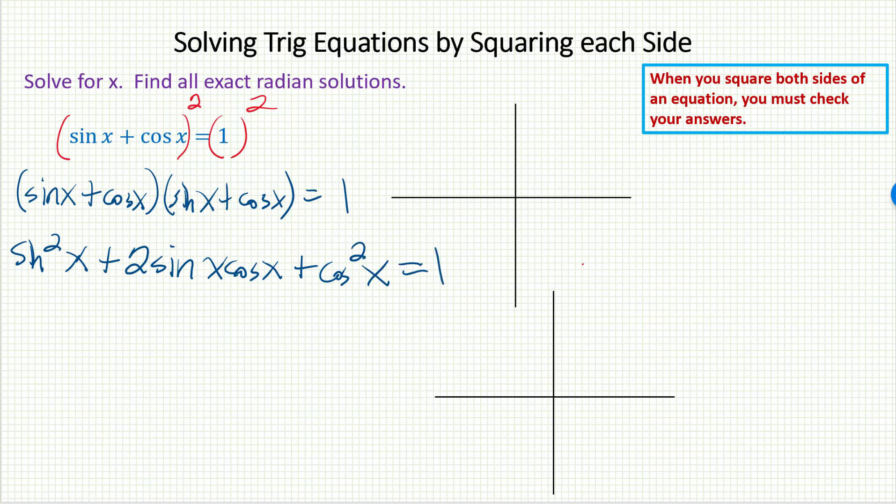Of course, at first glance, you might think, well, how in the world did this help me? It looks like we've made it worse. We haven't made it worse. It's actually gotten a lot better because once you start having sine squareds and cosine squareds, maybe there's some identity stuff that can happen. And this one is particularly nice because I see sin² x plus cos² x, that's just one. And then I notice that I've got that one on each side that I can easily subtract out, leaving me with just 2 sin x cos x equals zero.